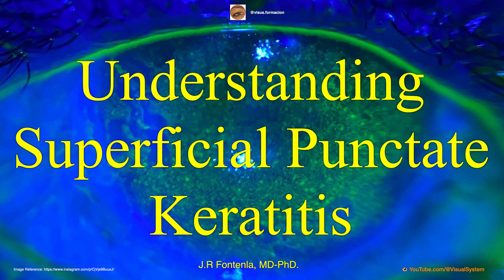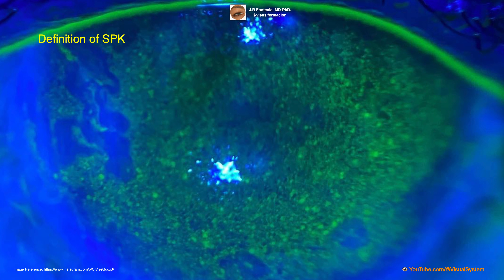Superficial punctate keratitis is a common ocular surface disorder that involves the corneal epithelium. It is an ocular surface disease characterized by the presence of multiple small, round, superficial corneal erosions or punctate epithelial lesions on the cornea.